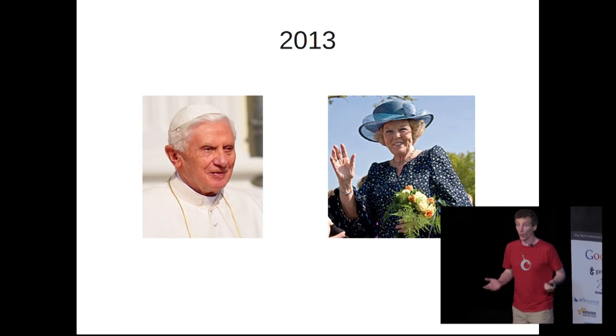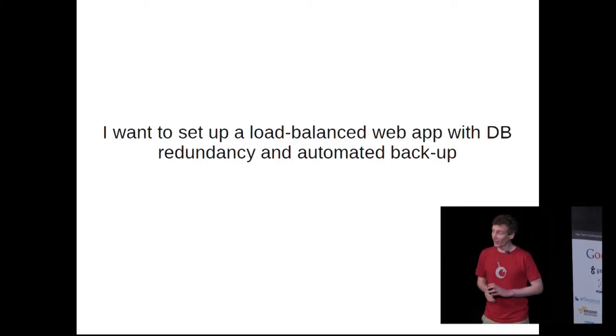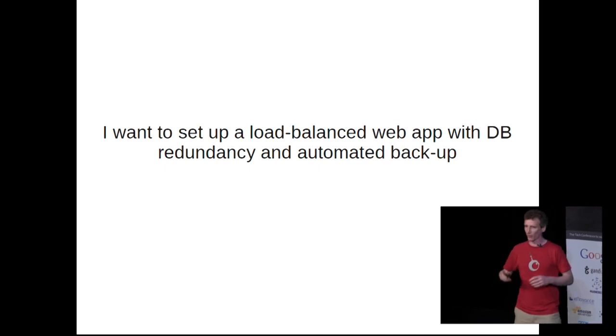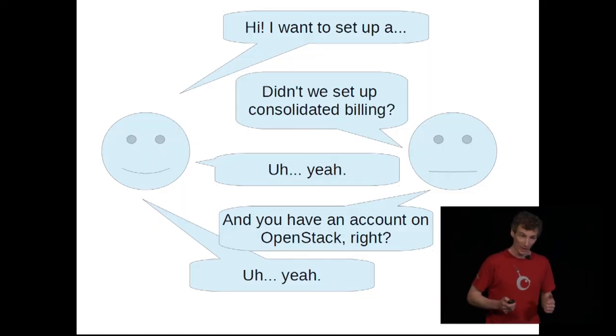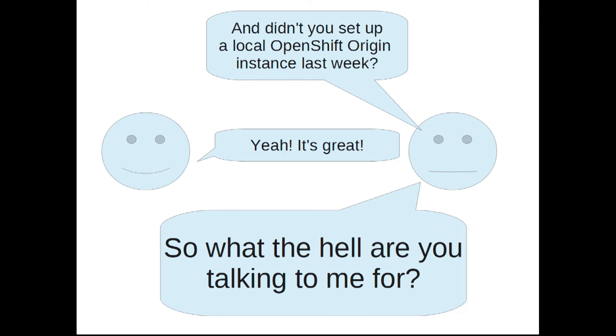Moving on to 2013 — this may be the only year in history where a Pope and a Queen have both resigned within a month of each other. Now your IT needs are getting pretty complicated. I want a load-balanced web server, a reverse proxy cache in front of it, object store behind, DB redundancy, and everything backed up. So you go to your IT guy and start to explain. He says, hold on — didn't we do consolidated billing a few months ago? And don't you have an account on that IaaS instance where we set up OpenStack six months ago? And didn't we set up OpenShift as well? So what the hell are you talking to me for? Do it yourself, you lazy bum.